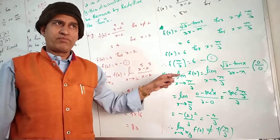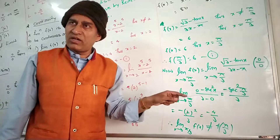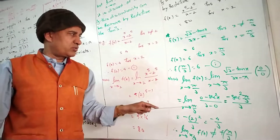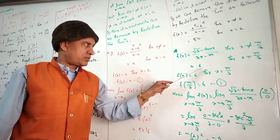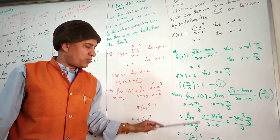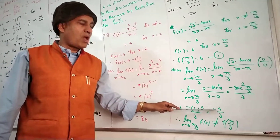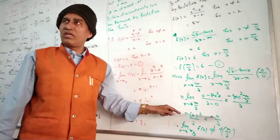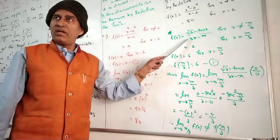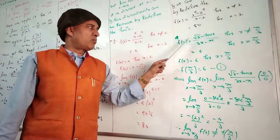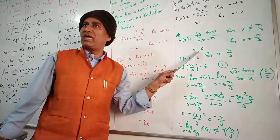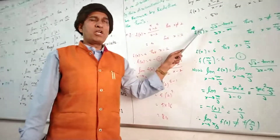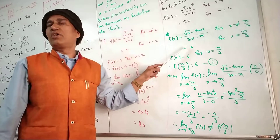From the result: f(π/3) = 6 and lim x→π/3 f(x) = -4π/3. We conclude that the limit and the function value at that particular point are not equal, so the function is discontinuous at x = π/3. But we can redefine the function: replace f(π/3) = 6 with f(π/3) = -4π/3. Now the function becomes continuous at x = π/3.